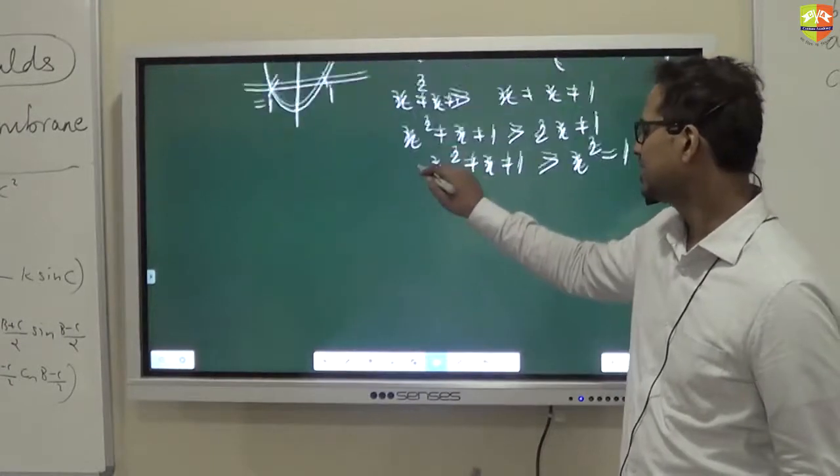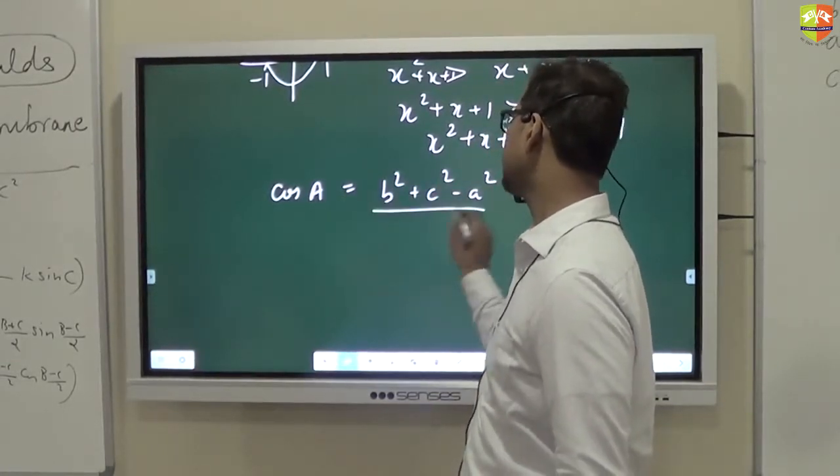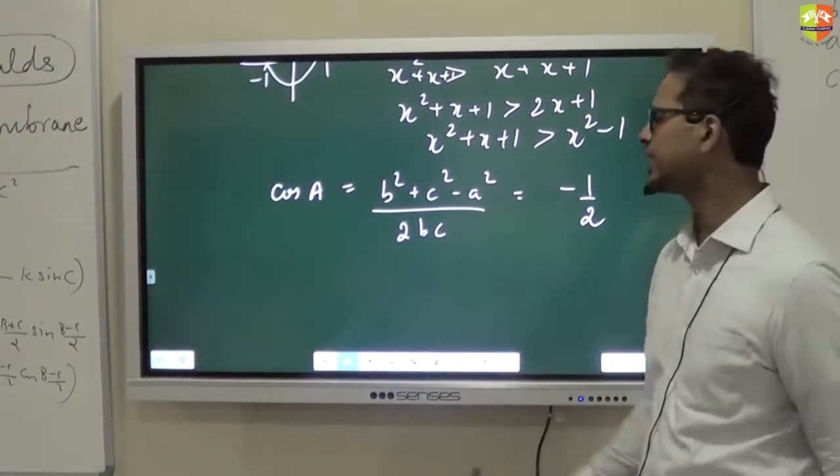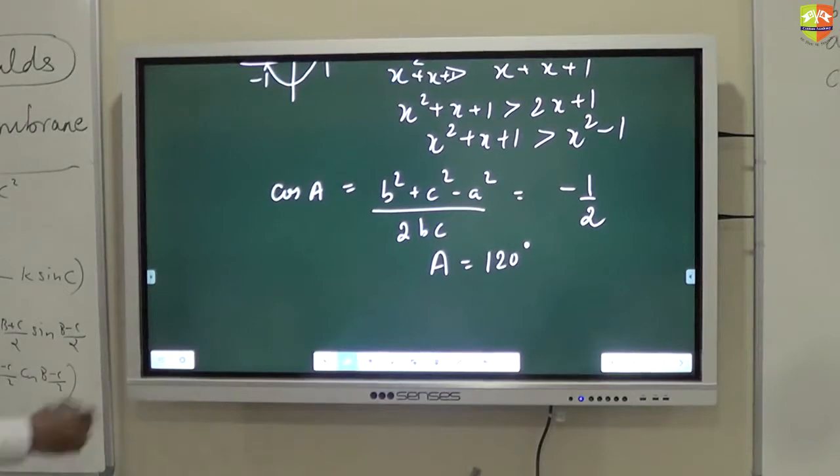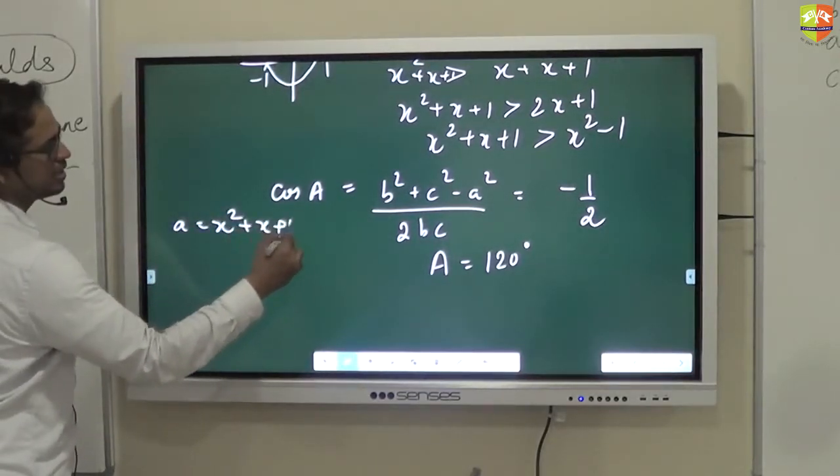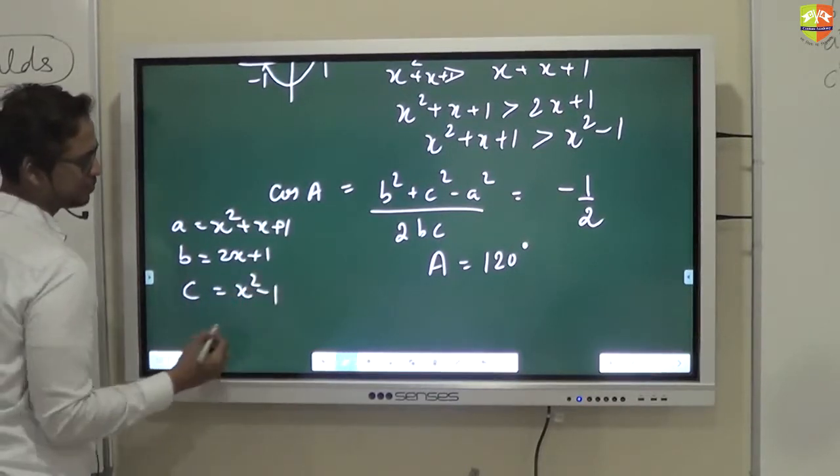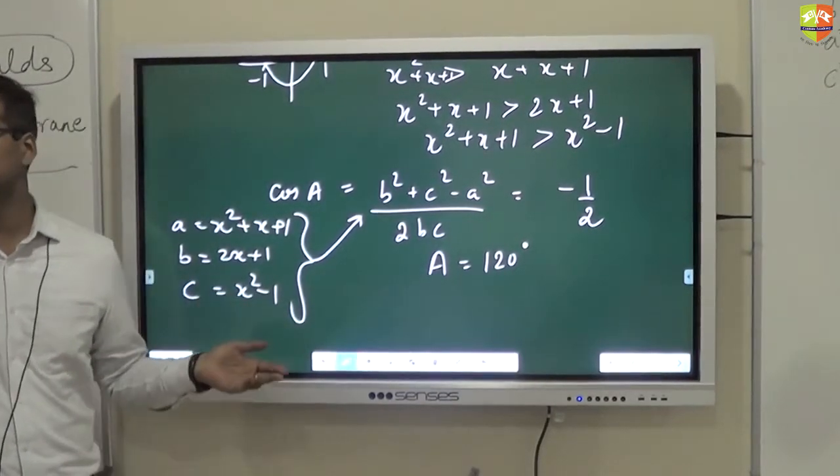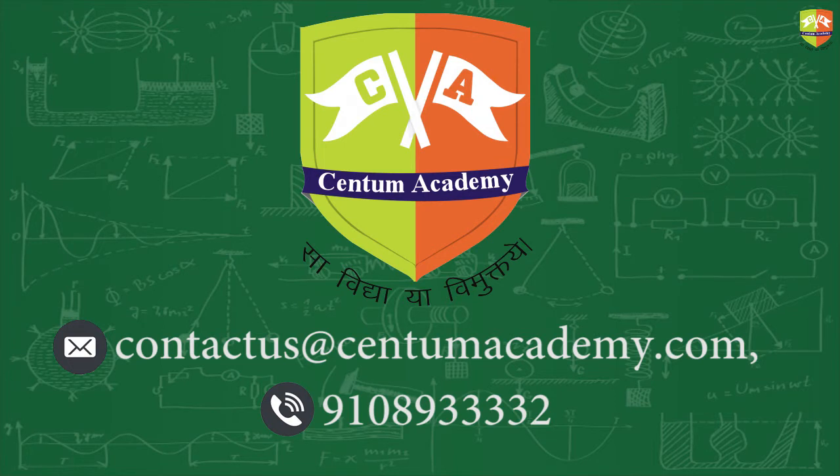If I call it as A, B, and C, then the angle opposite to the largest side is the largest angle. If this is A, then cos A or angle A is the largest. So cos A would be (b² + c² - a²) / 2bc. Then you'll get a lengthy equation which you can do at your end. You substitute here A as x² + x + 1, B as 2x + 1, and C as x² - 1, which implies A is 120°.